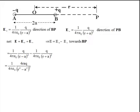We recall here that 2Aq is termed as electrical dipole moment, whose direction is from negative charge to positive charge. For this diagram, we can say the electrical dipole moment is from A to B, or towards direction AB or towards BP, which is same.